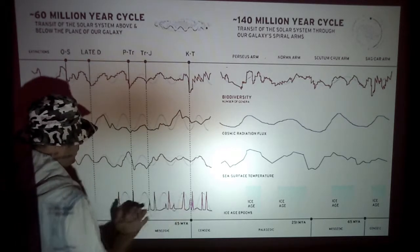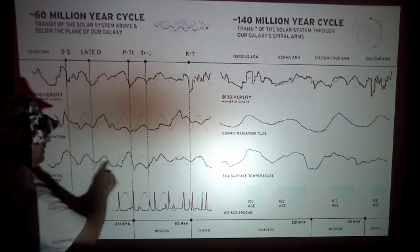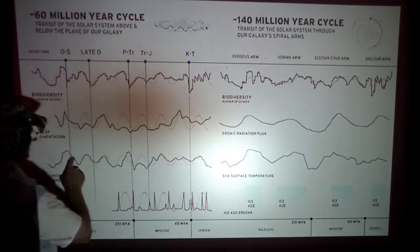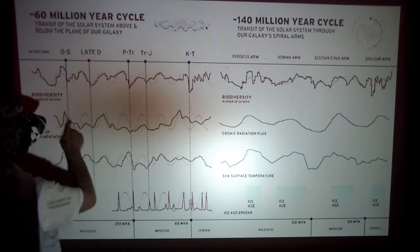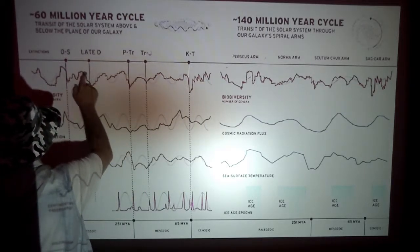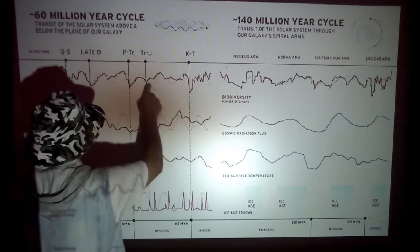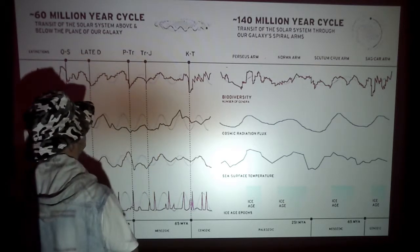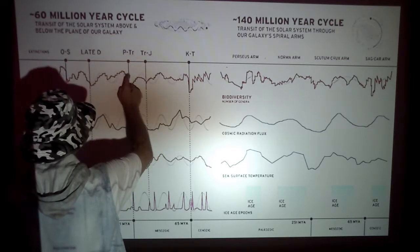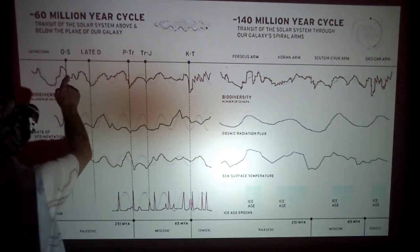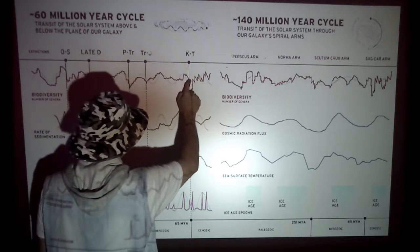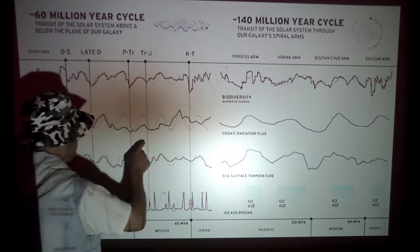Sea surface temperatures appear to follow the volcanic activity - that's an almost perfect match. We have cosmic radiation flux where a couple of peaks line up, and biodiversity that ebbs and flows. The volcanism peaks appear directly related to travel through the equatorial plane - the peak would be when we travel through it, with activity right afterwards.